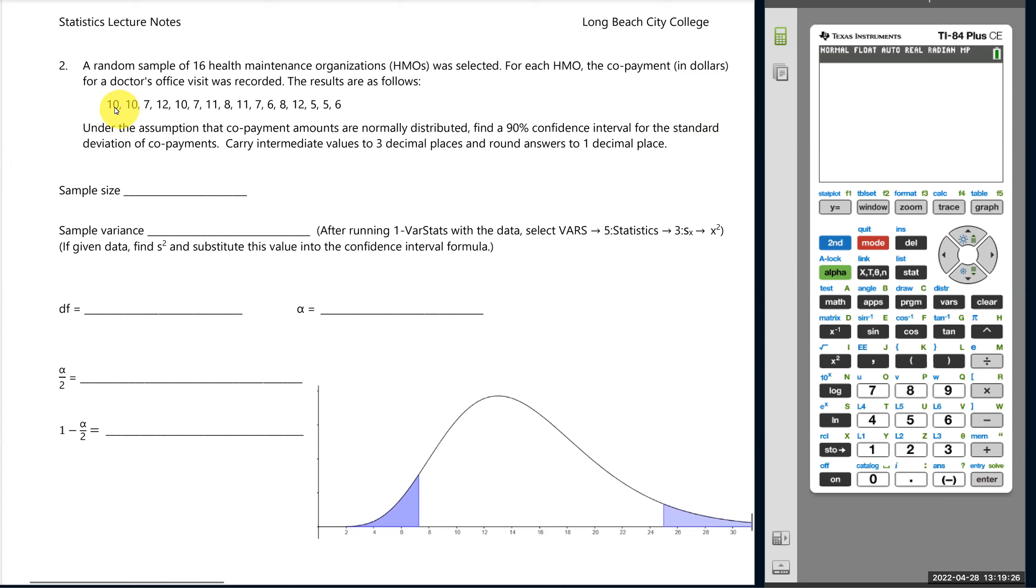So obviously in our sample there's variety, and let's start with our sample size. We've got 16 HMOs, and I'm going to go ahead and fill in our degrees of freedom here. So degrees of freedom, n minus one, 16 minus one gives us 15 degrees of freedom. And we will be constructing a 90% confidence interval.